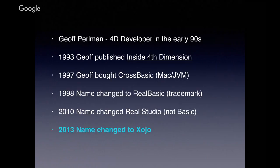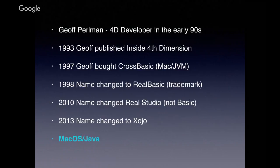Zojo started as cross-platform between Mac OS and Java Virtual Machine, then dropped Java and added Windows — though the Windows implementation was really bad at first. Then they added Linux support, then web support several years ago to create web apps, then iOS support a couple of years ago. The iOS support is much like what 4D has had — you can start it but you're going to end up in Xcode. As far as Zojo's iOS goes, I'll just go straight to Xcode to do my work. They also added Raspberry Pi support just last year.